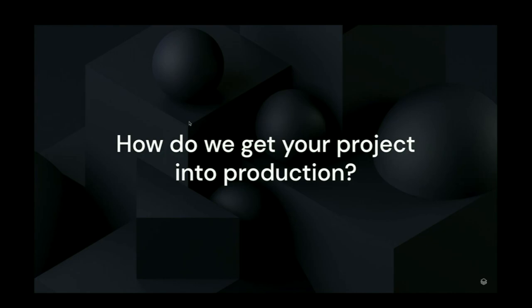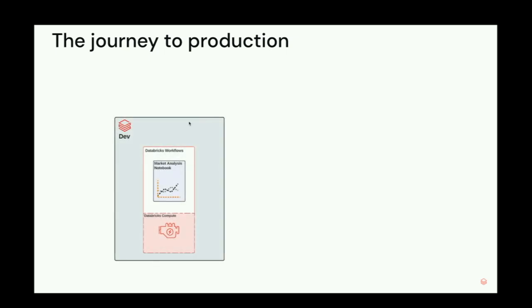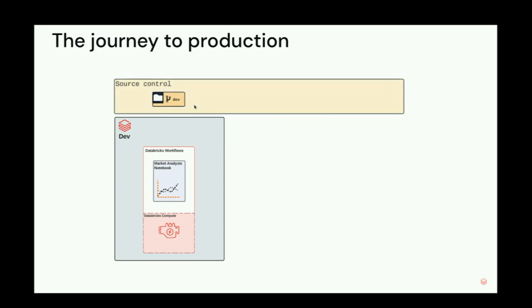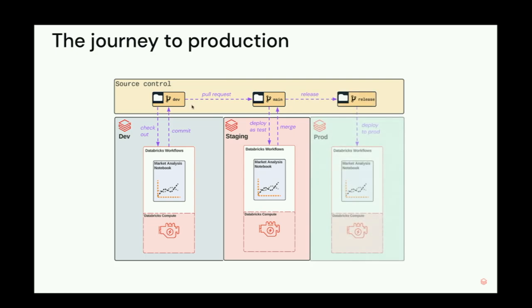How do we actually get these into production? It's a very standard CI/CD workflow. We have a dev workspace and a version control system. When we want to make a change, we check out a new branch, make our changes, commit them back to version control, and when we make a pull request, we can deploy that code to a staging or test workspace. Assuming the tests all pass, we merge our code back into the main branch, cut a new release, and then safely deploy into the production workspace.